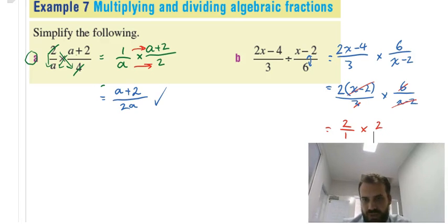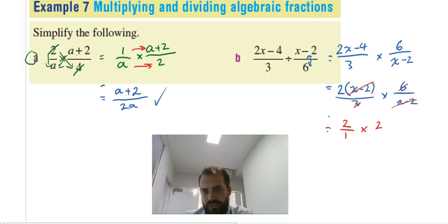So just finishing that up, what we have is 2 over 1 times 2 over 1 just becomes top times top, bottom times bottom, 4 over 1, or just plain old 4.